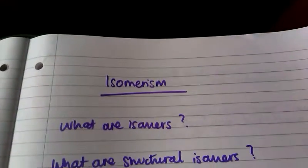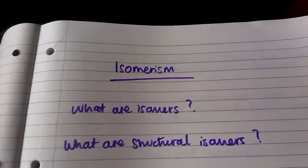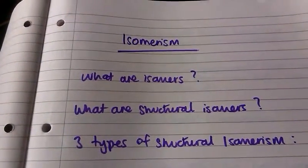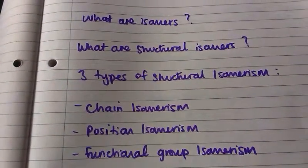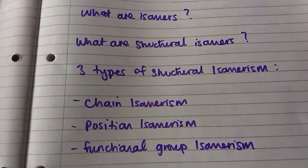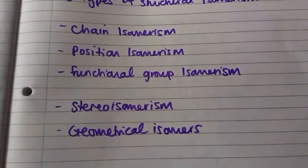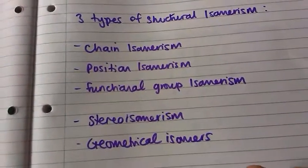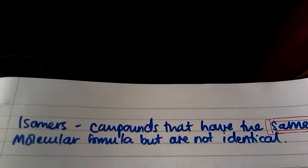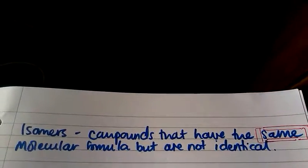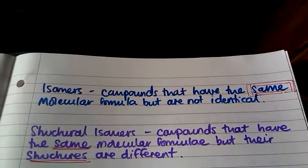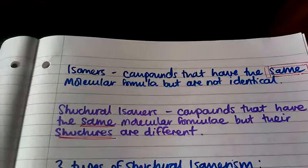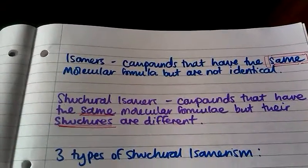This video is going to focus on isomerism. Firstly, I'm going to go through what isomers and structural isomers are, and then the three types of structural isomerism you'll come across: chain isomerism, position isomerism, and functional group isomerism. Finally, I'm going to go through what stereoisomerism and geometrical isomers are.